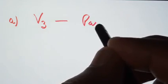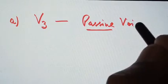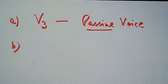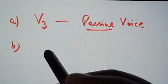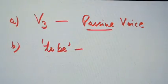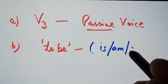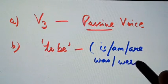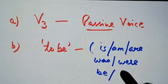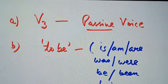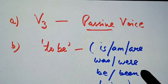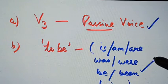Under this rule, the first thing we have to remember is that we must always use the third form of the verb in passive voice. The second thing under this rule is that before the third form, we will always use 'to be' verbs. These to-be verbs are the helping verbs: is, am, are, was, were, be, been, and being. With these we will always use the third form of the verb.